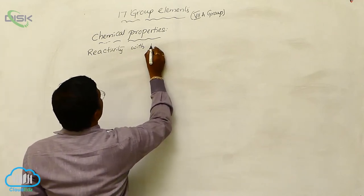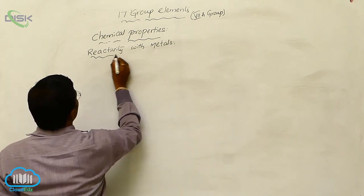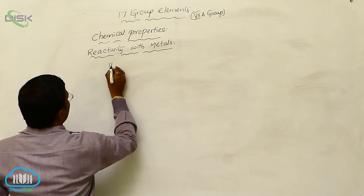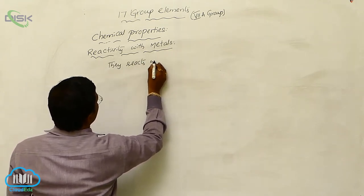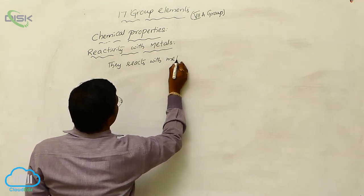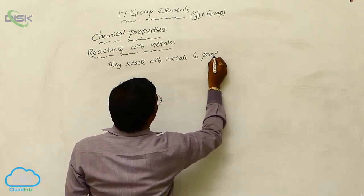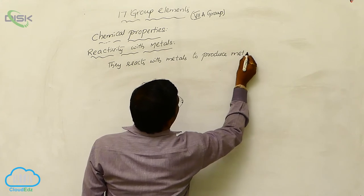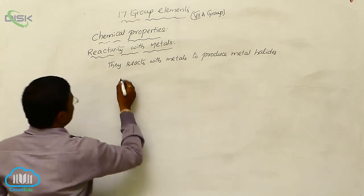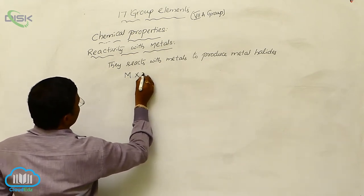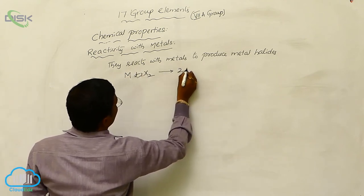Reactivity of halogens with metals. Halogens react with metals to produce metal halides. For example, M + X₂ gives rise to 2MX.